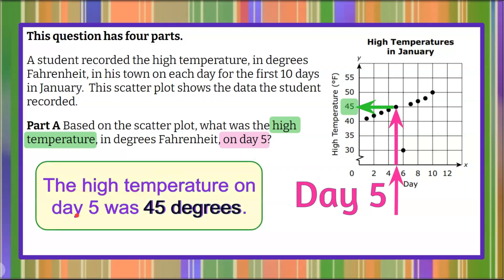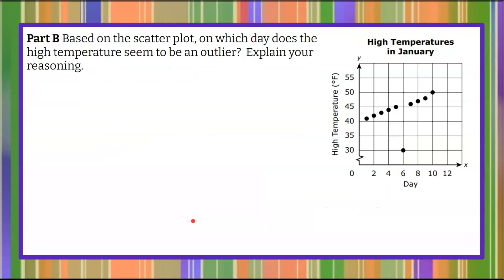the data point in the scatterplot tells me that that high temperature will be 45 degrees. So let's answer our question. The high temperature on day 5 was 45 degrees. That's part A. Moving on to part B. Based on the scatterplot, on which day does the high temperature seem to be an outlier, and we need to explain our reasoning. So pause the video here, answer the question, and come back to see my work.